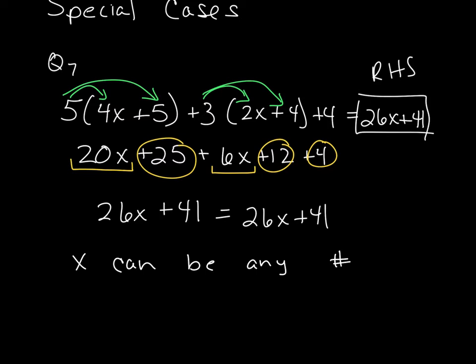Because if x was 0, it would still be 41 is equal to 41. If x was 1, when I plug that in, I'll still have the same thing on both sides. So what this is, is an example of an infinite number of solutions.